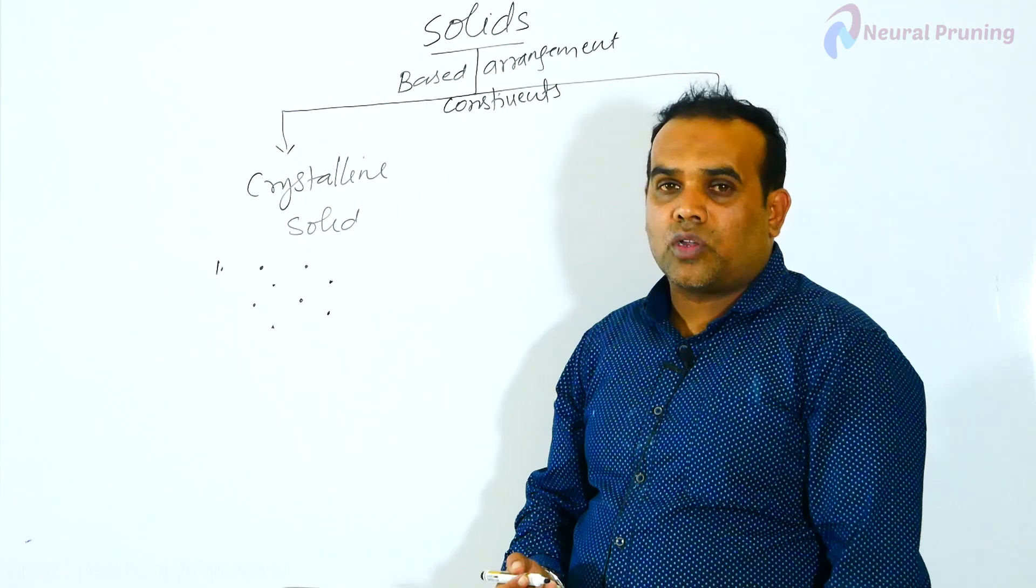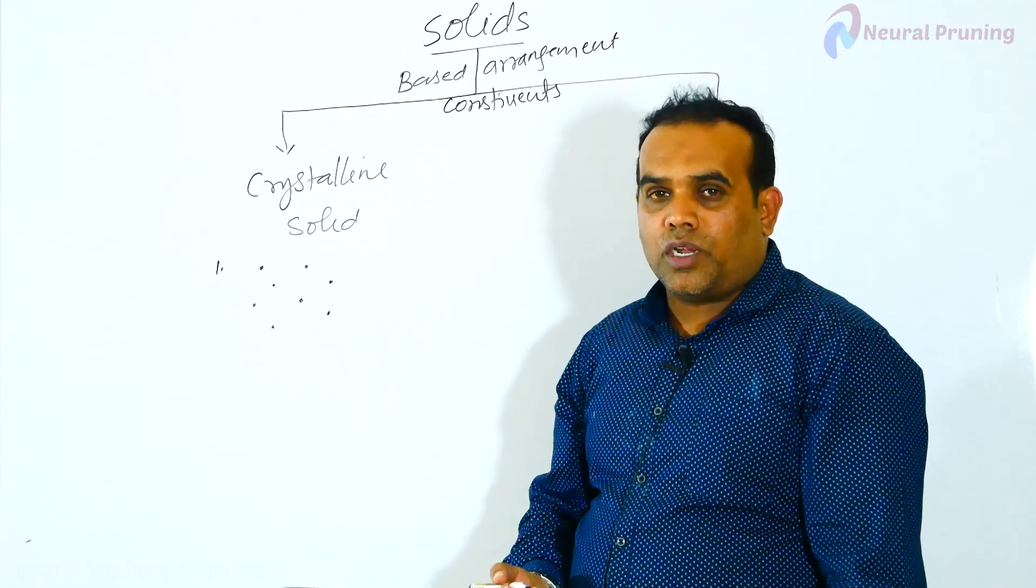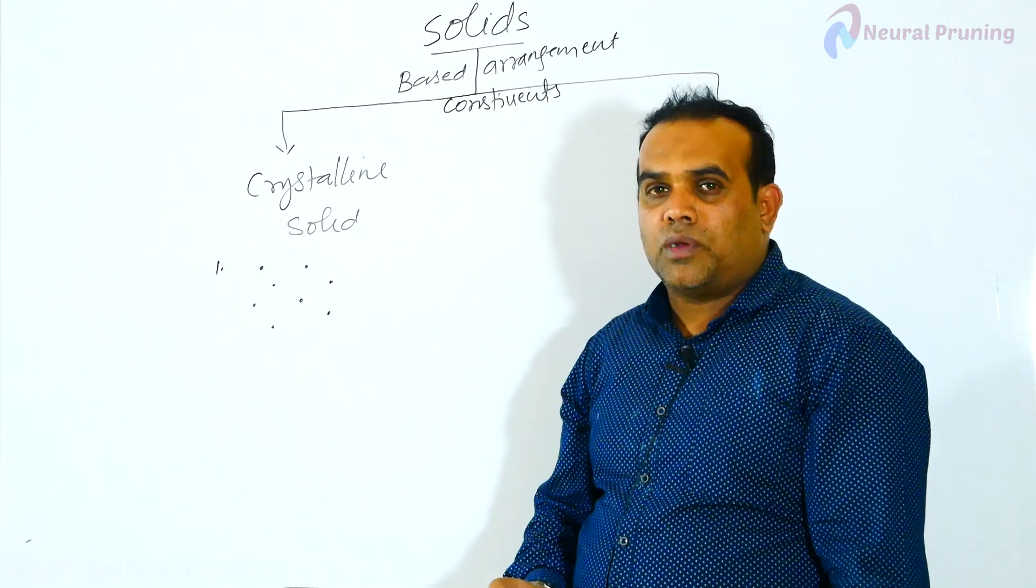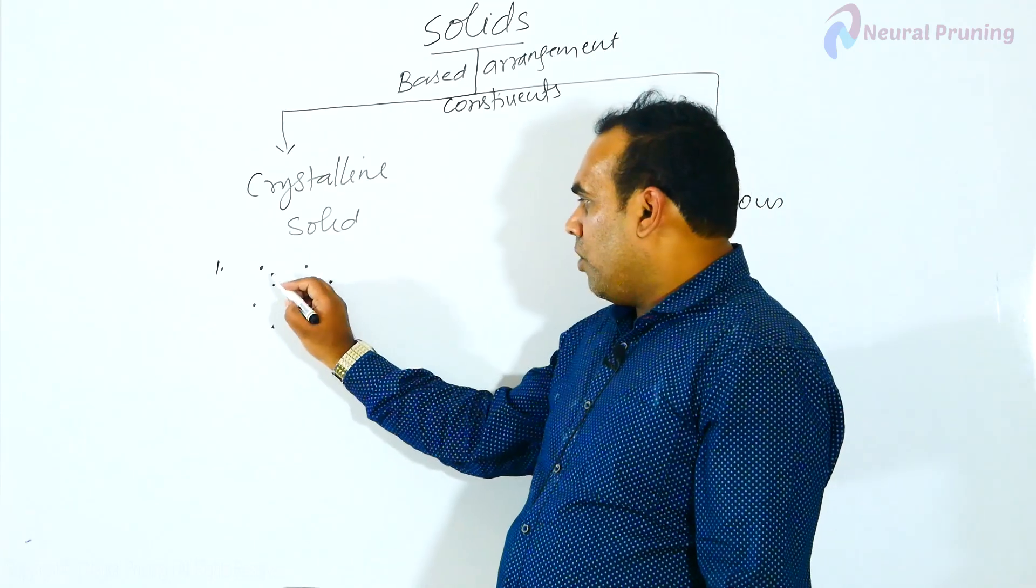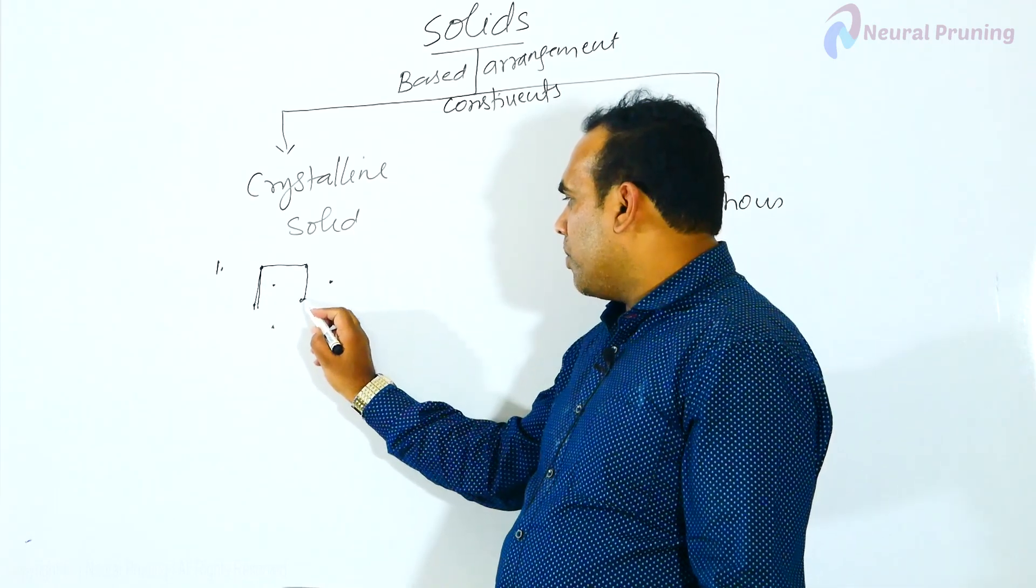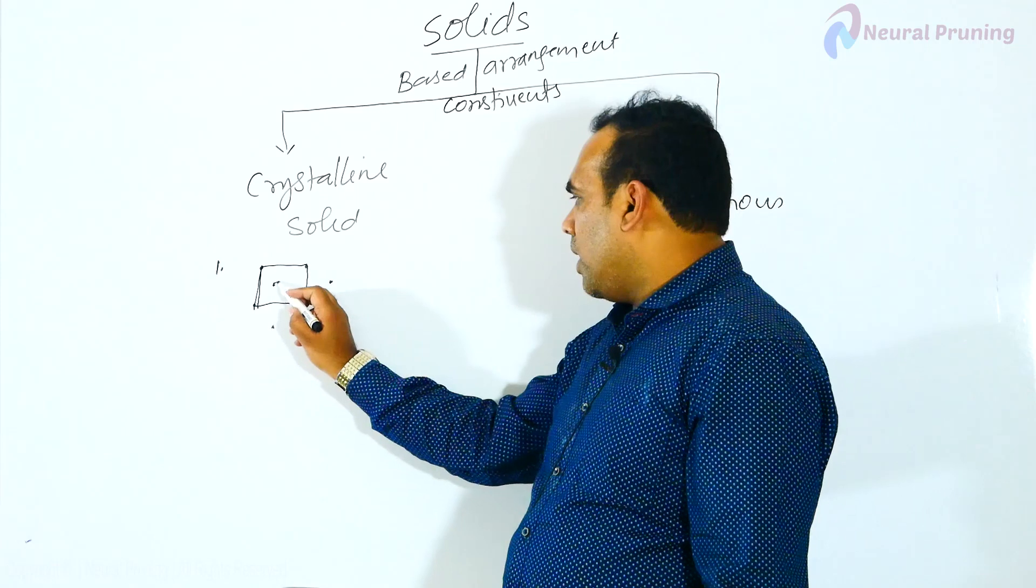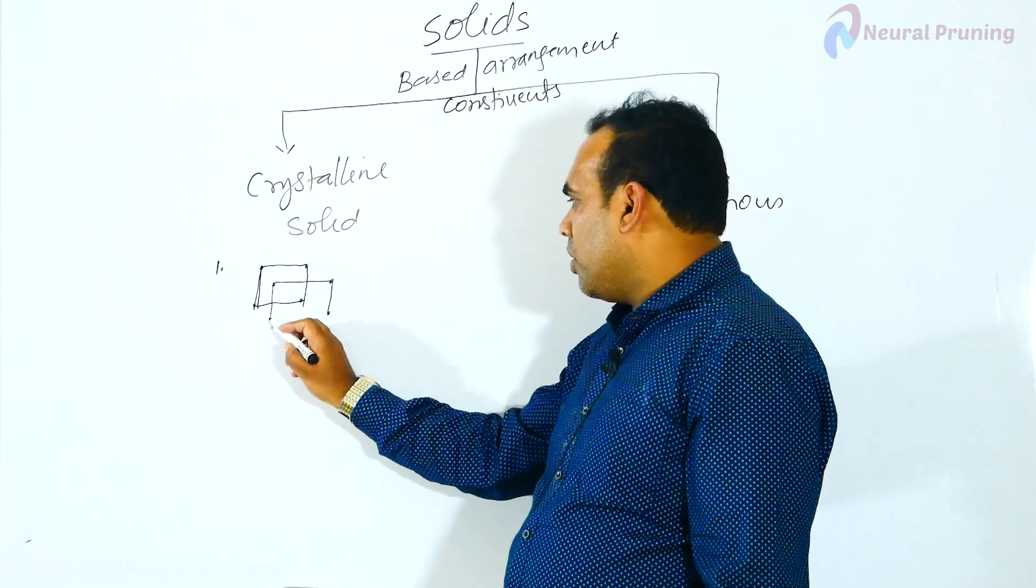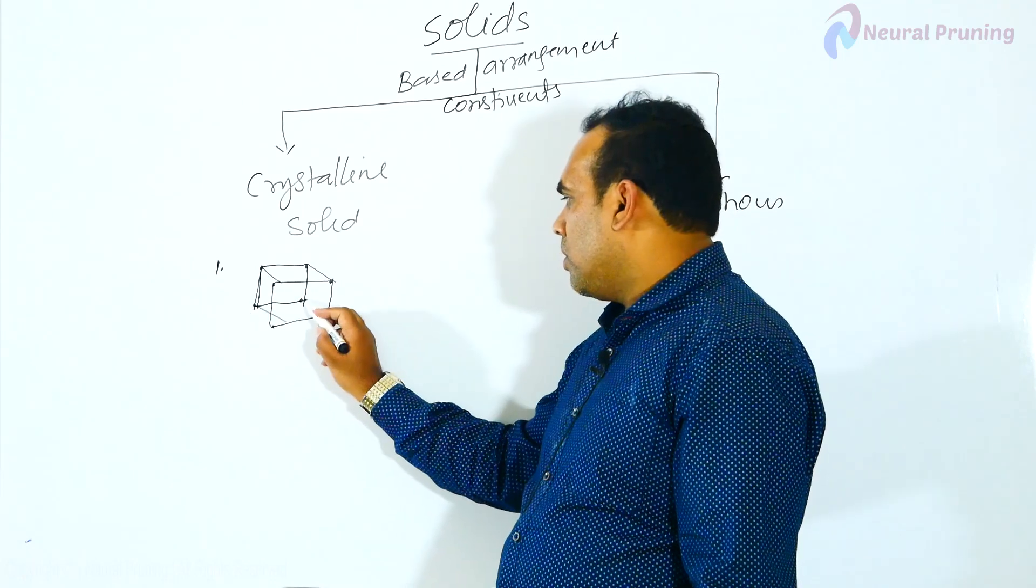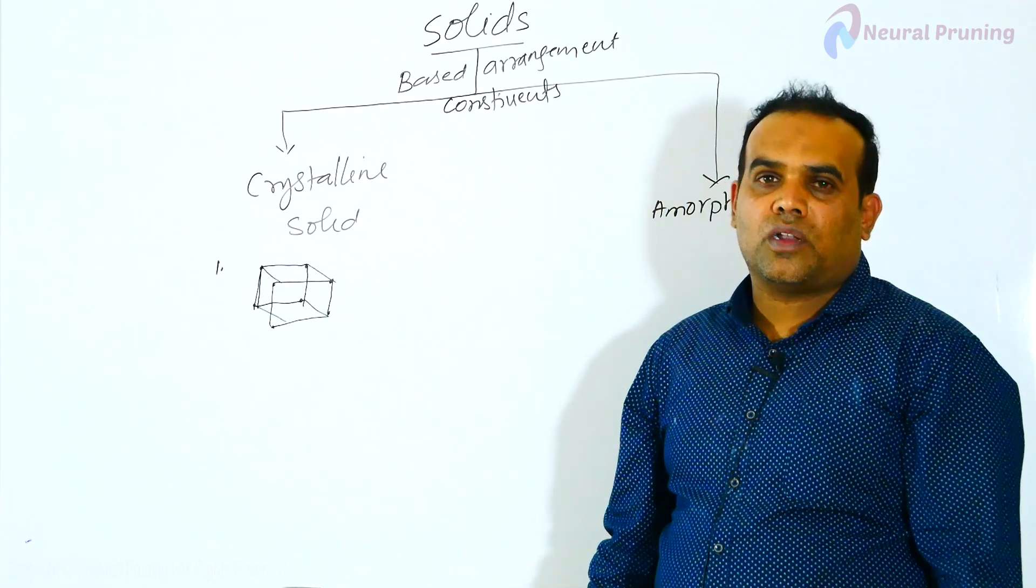What are crystalline solids? The constituent particles are regularly arranged in a three-dimensional space to give a definite geometrical shape. This is a geometrical shape what we are getting. When you draw a line, we get a definite geometrical shape. This is a crystalline solid.